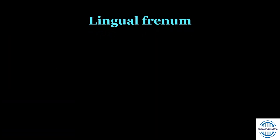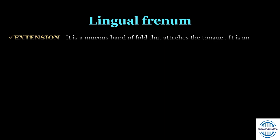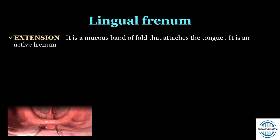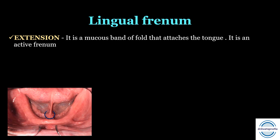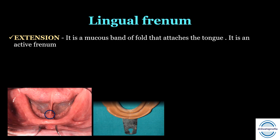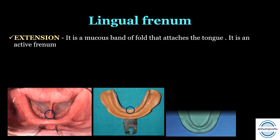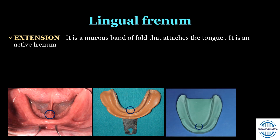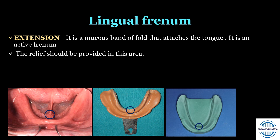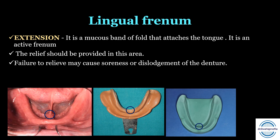Coming to the lingual side, we have the lingual frenum — a mucous band or fold that attaches the tongue. It is an active frenum. It is recorded as a lingual notch in the impression, and we can locate it on the cast. Relief should be provided in this area; if not, it may cause soreness and dislodgement of the denture.